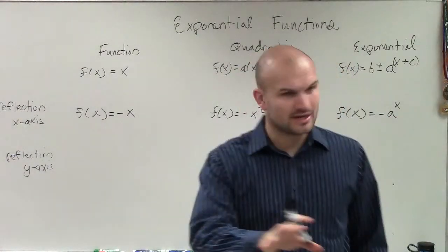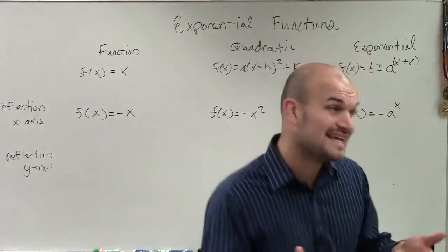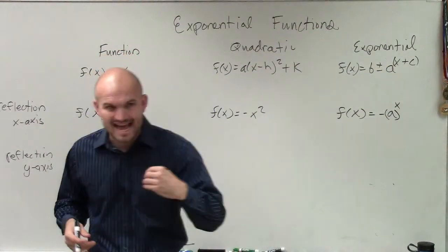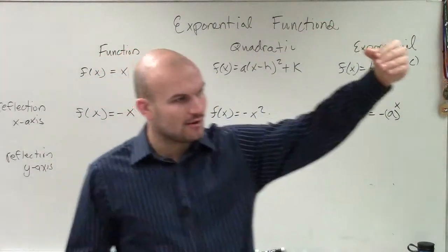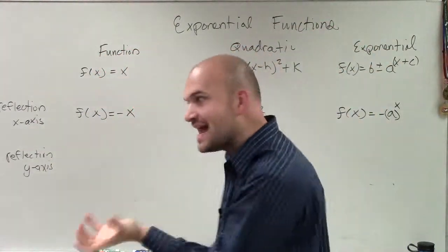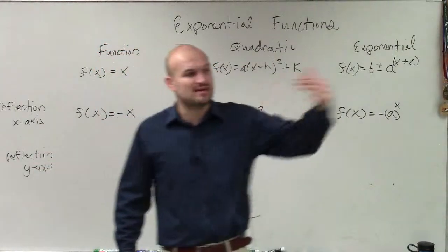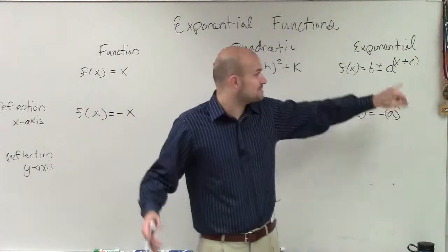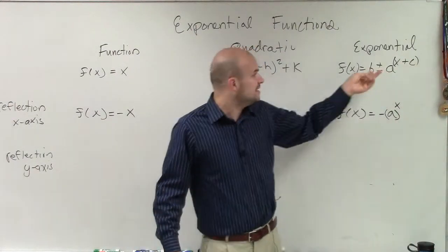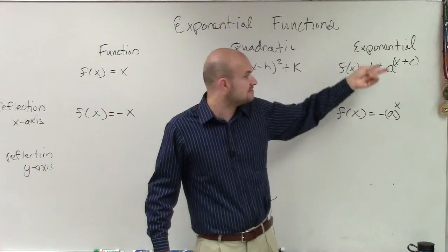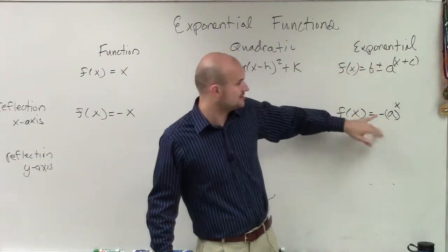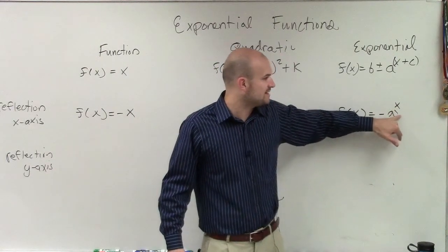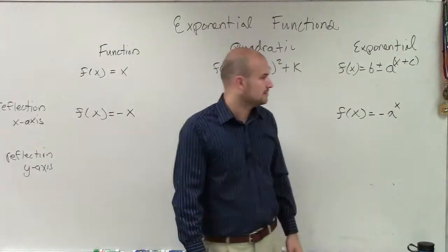Now, some of you might say, but Mr. McLogan, a has to be greater than 0, right? But remember, a is greater than 0. Order of operations: A is being raised to that power. Then that function, that exponential function, that is what is being multiplied by negative. So the negative is not negative a. You have your exponential function, a to the x plus c. But a can be, or I'm sorry, the function can be positive or negative. So don't confuse a negative a to the x as a being negative, because that x is being raised to that power.